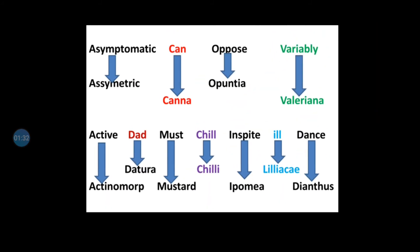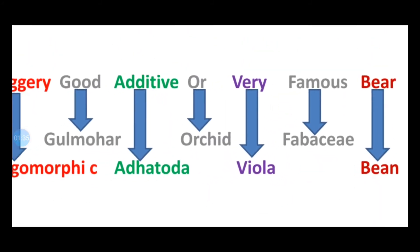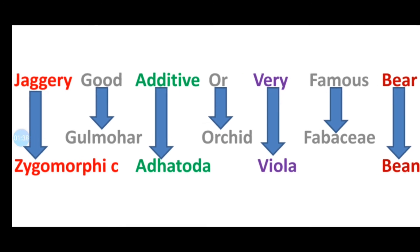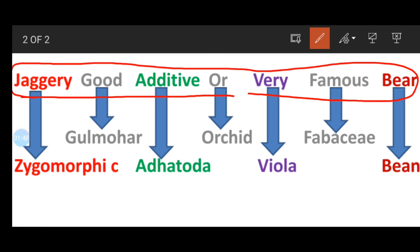Now look at next. Zygomorphic symmetry. So this is the third type of symmetry that you can say zygomorphic. Zygomorphic, how you can learn? This is the mnemonic: Jaggery good additive or very famous bean. Means Jaggery, this is the good additive or very famous bean.